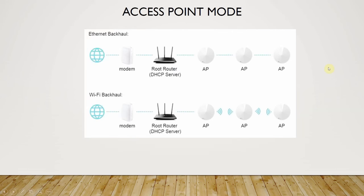Now let's move on to access point mode. In access point mode, you can ignore the root router since most modems from ISPs include the router as well. But here, typically what happens is two networks get created. Let's suppose this is your house - on one side you have the Deco and on the other side you have the ISP router. There'll be two networks and both will try to compete with each other, and your devices will also be sort of confused.